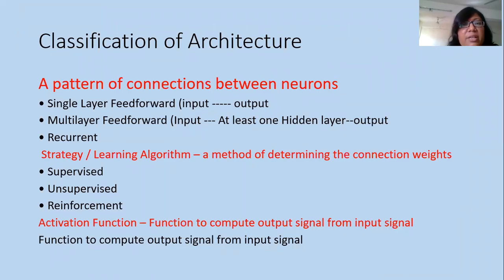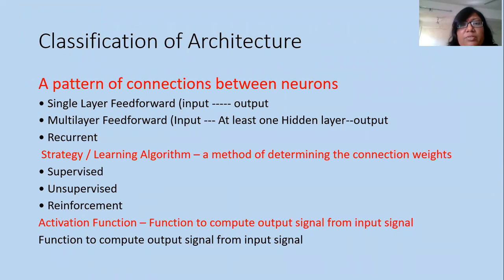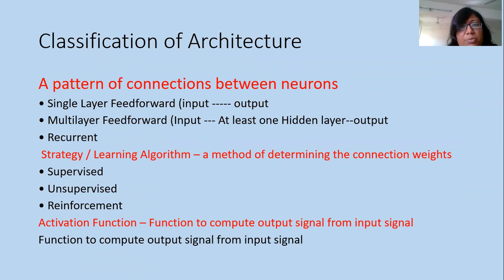The classification of architecture depends on the pattern of connection between the neurons. Feed-forward networks are of two types: single-layer and multi-layer. Feed-forward means there is a one-direction movement of information — the output of one node becomes the input of the second node, the output of the second becomes the input of the third, and so on.